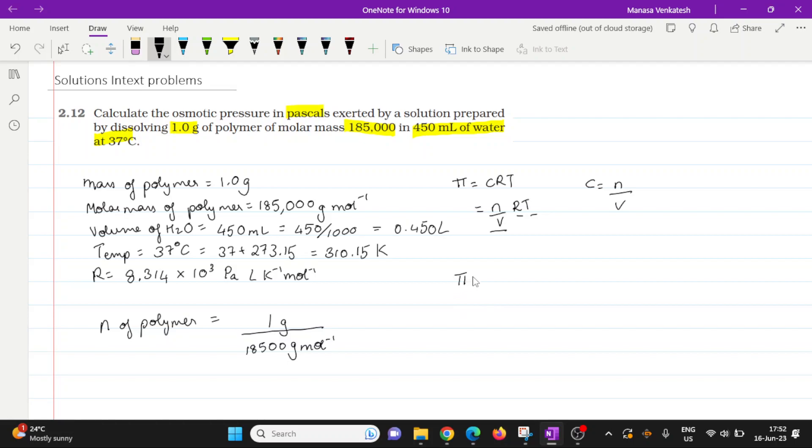Okay, so π will be equal to n, 1 gram divided by 185,000 grams per mole. I just missed a zero, I think I missed it here, 185,000 grams per mole into 1 by V. So I'll just put RT by V.